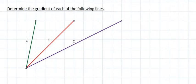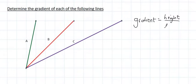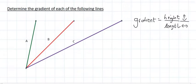What we have seen so far is that gradient is the ratio between the height over the length. So it's all about how up or down divided by how left or right.